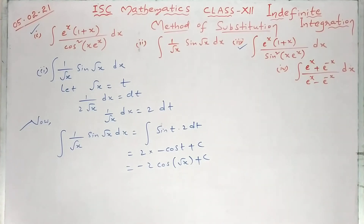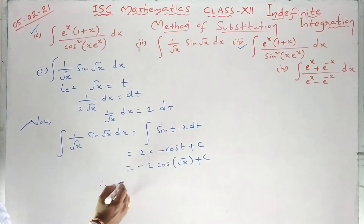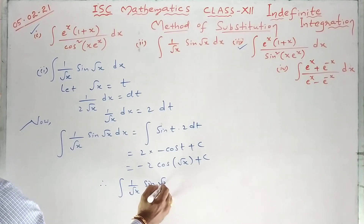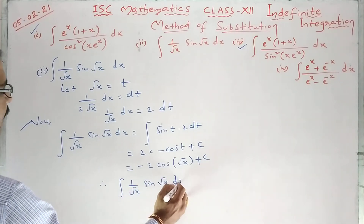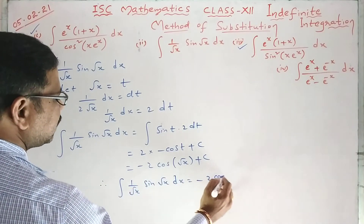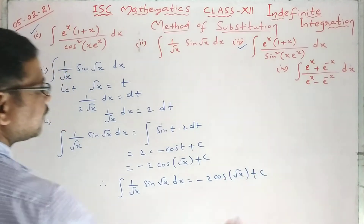Integration of sin t is minus cos t, so we get minus 2 cos t, which means minus 2 cos of root x plus c. Because the derivative of cos theta is minus sin theta. Therefore, the integral of 1 over root x times sin(root x) dx equals minus 2 cos of root x plus c.